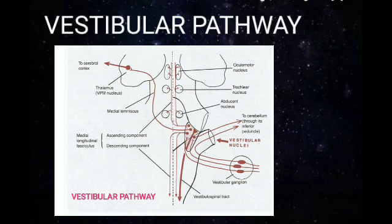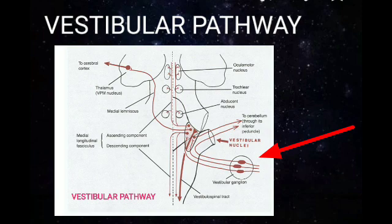Now let us learn the vestibular pathway, which is for maintenance of balance and equilibrium. The first order neurons of this vestibular pathway are the bipolar neurons located in the vestibular ganglion, which is located at the lateral end of the internal acoustic meatus. The bipolar neurons show two processes: a peripheral process that ends on the receptors of the maculae and cristae ampullaris, and a central process that forms the vestibular nerve, passing through the internal acoustic meatus and entering the posterior cranial fossa.